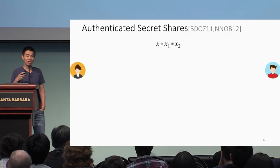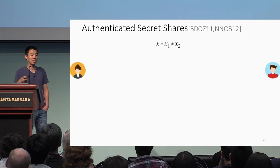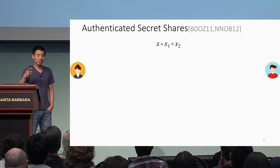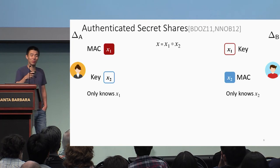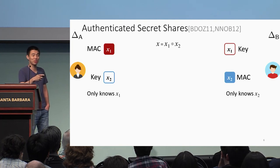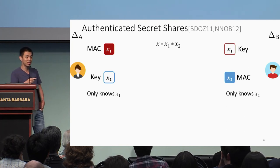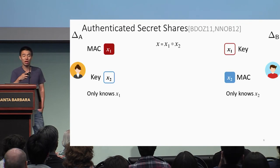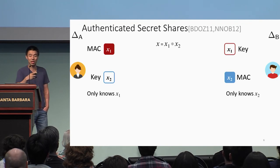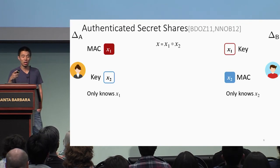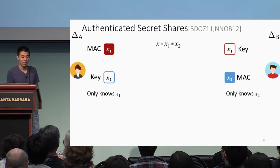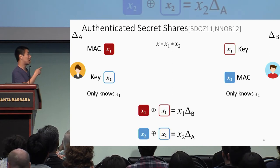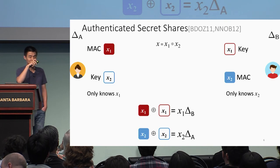Once we can locally authenticate a bit, we can authenticate secret shares. It's quite simple — we just do it twice in different directions. Everyone holds one share of the bit and authenticates their share to the other party. The relationship is symmetric.